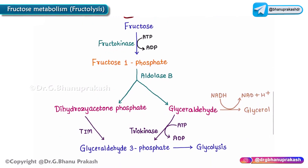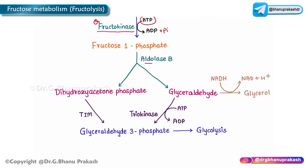The first enzyme to act upon fructose in fructolysis is fructokinase. Fructokinase catalyzes the reaction converting fructose to fructose-1-phosphate. In this reaction, ATP is utilized, releasing inorganic phosphate which is added to fructose to form fructose-1-phosphate.